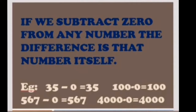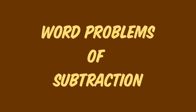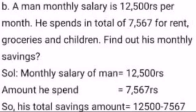For example, 35 minus 0 is 35. The next property is the same-number property: if we subtract a number from itself, the difference is 0. For example, 53 minus 53 is 0, and 56 minus 56 is 0.